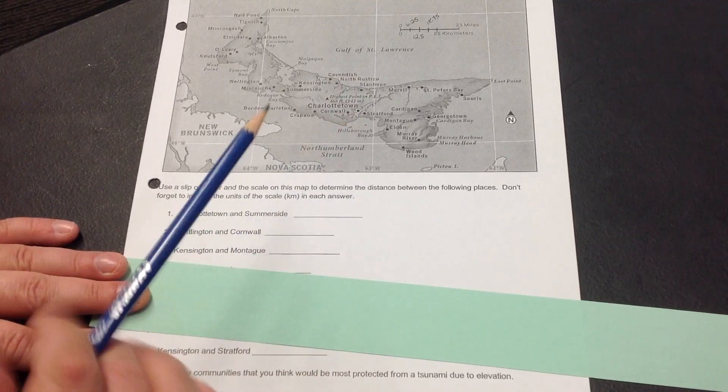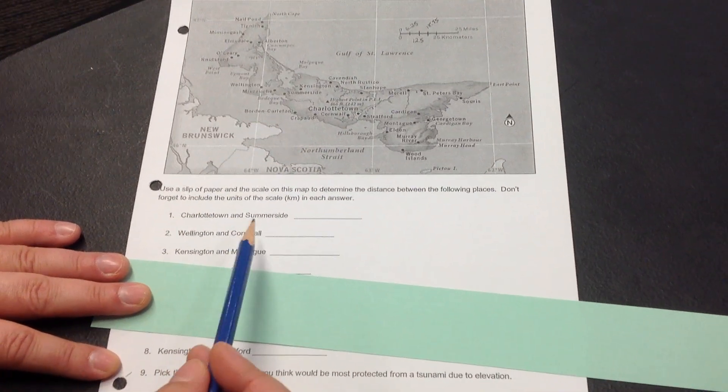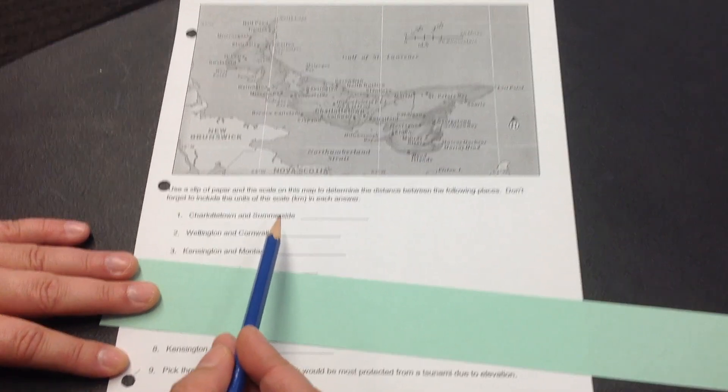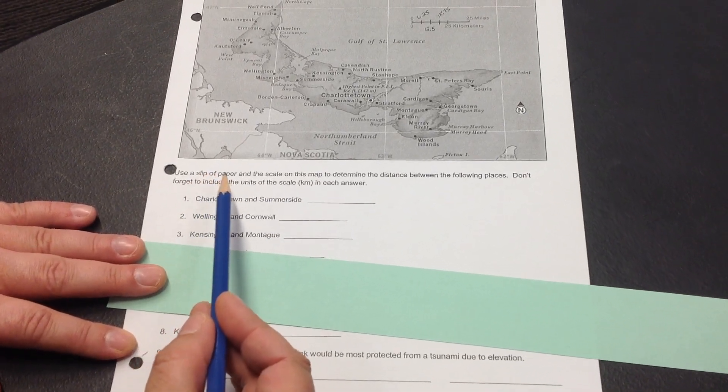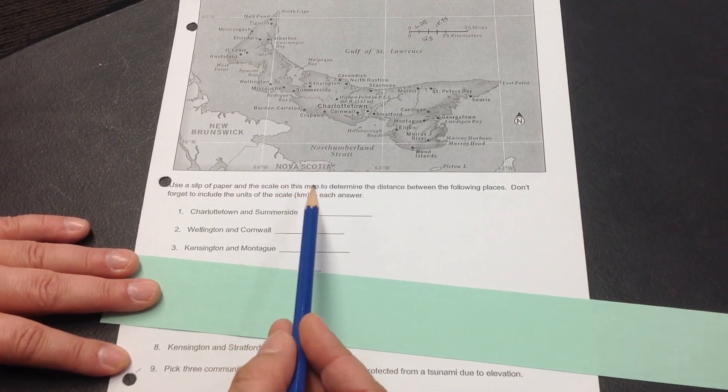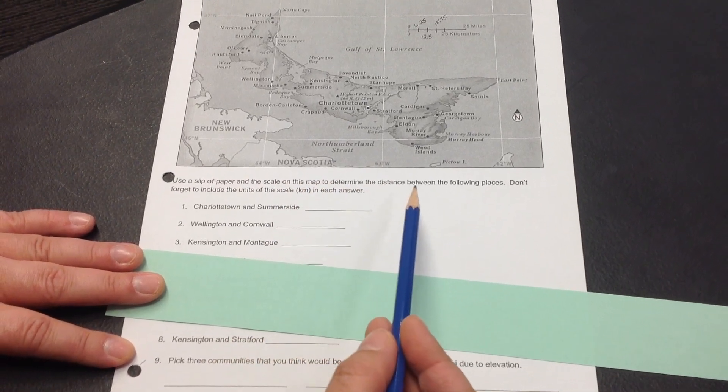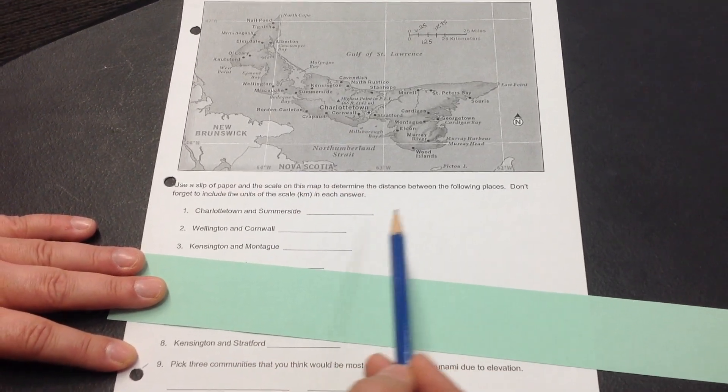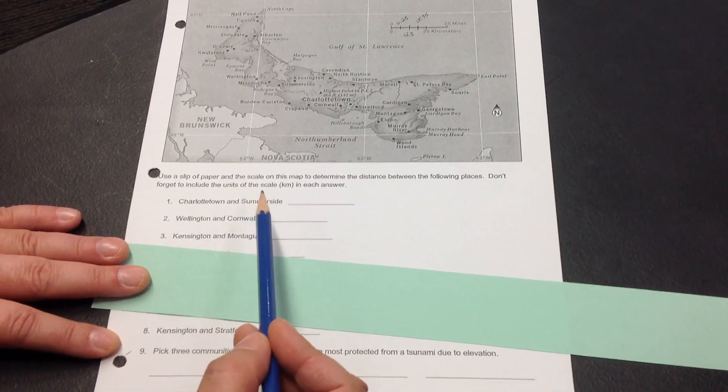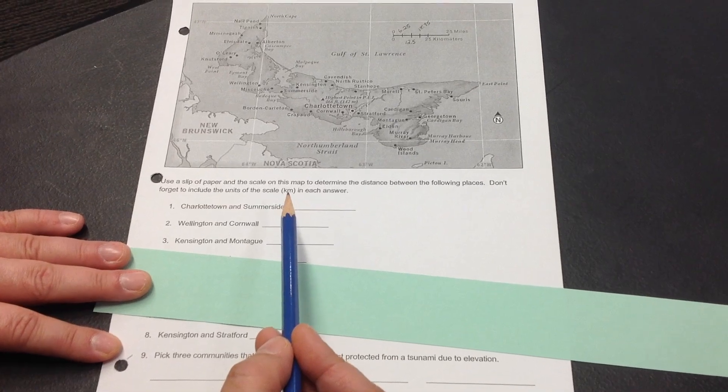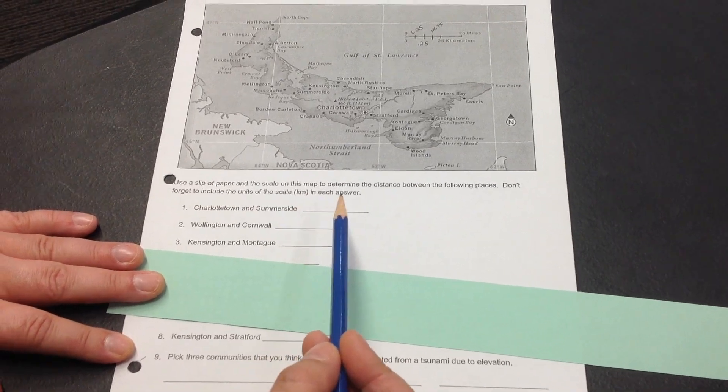The very first question says Charlottetown and Summerside. The directions are use a slip of paper and scale on this map to determine the distance between the following places. Don't forget to include the units of the scale, kilometers, in each answer.